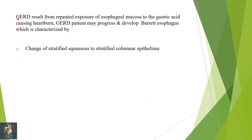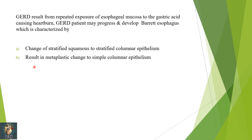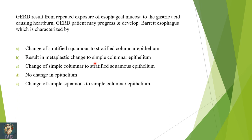Next: GERD results from repeated exposure of esophageal mucosa to gastric acid causing heartburn. A GERD patient may progress to develop Barrett's esophagus, which is characterized by a metaplastic change. The esophagus is normally lined by stratified squamous epithelium. Barrett's esophagus involves a metaplastic change from stratified squamous to simple columnar epithelium. So option B is the correct option.